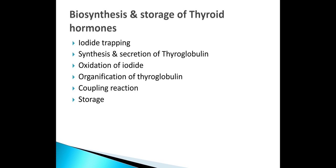Iodine is a trace element selectively trapped by the thyroid gland. The basal membrane of the acinar cells has the ability to pump iodide by secondary active transport along with sodium. By this method, the concentration of iodide in the follicular cell is increased 30 times its concentration in the blood.